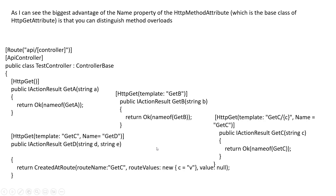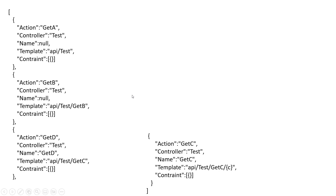Here is an example. The first class is the test controller class, which inherits the ControllerBase class, so you have to use the API. Here we have an HTTP GET method with no parameter, no template, and no name property. In GET B, we have a template that is GET B, a parameter called last, and the action name is also GET B, but the name is null.